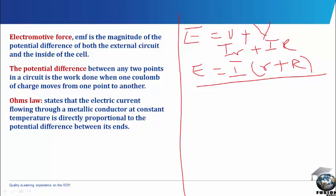This law states that the electric current flowing through a metallic conductor at constant temperature is directly proportional to the potential difference between its ends. That means V is directly proportional to I. And since proportionality is a dummy sign, we introduce a constant. So V is equal to IR.